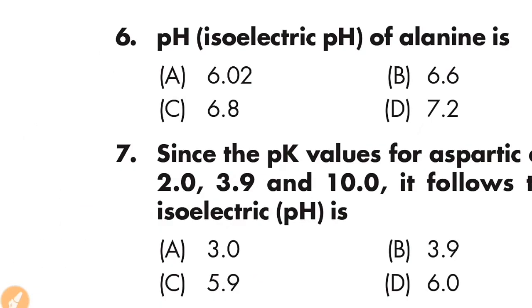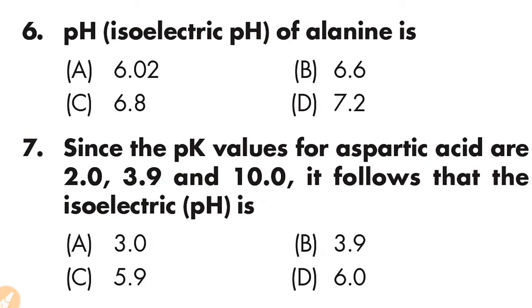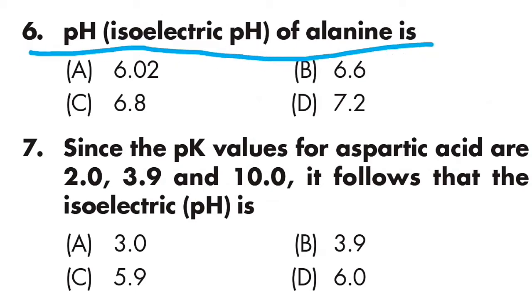Question number six: the isoelectric point of glycine. Option A is 6.02, Option B is 6.6, Option C is 6.8, Option D is 7.2. Option A is correct — the isoelectric point of glycine is 6.02.